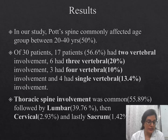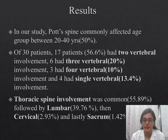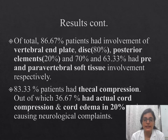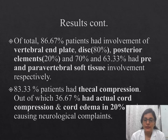In our study, Pott's spine commonly affected the 20 to 40 year age group. Of 30 patients, 17 had two-vertebral involvement; the rest had three, four, or single vertebral involvement. Thoracic spine involvement was most common at 55%, followed by lumbar, cervical, and sacrum. 86% of patients had vertebral end plate involvement, 80% had disc involvement, 20% had posterior involvement, and 83% had thecal compression, of which 36% had actual cord compression leading to paraplegia, with cord edema seen in 20 patients.